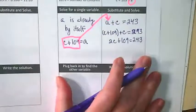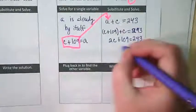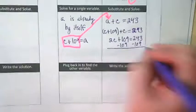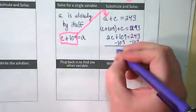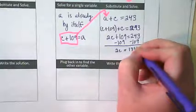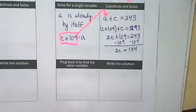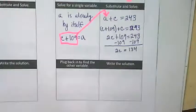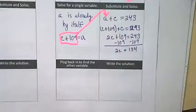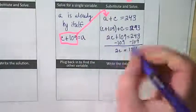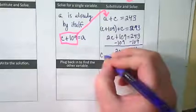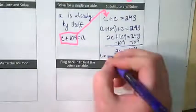What should we do next? Subtract 109. We're going to subtract 109 from both sides. And we get 2C is equal to 134. What's our final step? Divide by 2. And I get C is equal to 67.